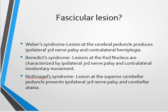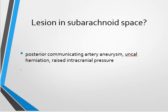Benedict syndrome is characterized by ipsilateral third nerve palsy with contralateral tremors or involuntary movements, with the lesion at the red nucleus. Nothnagel syndrome presents with ipsilateral third nerve palsy and cerebellar ataxia, with the lesion at the superior cerebellar peduncle.